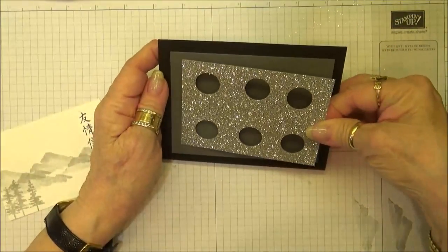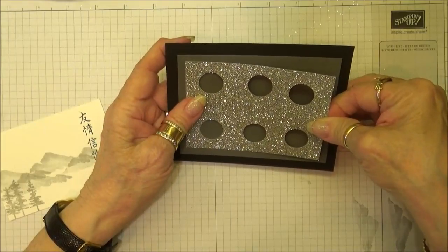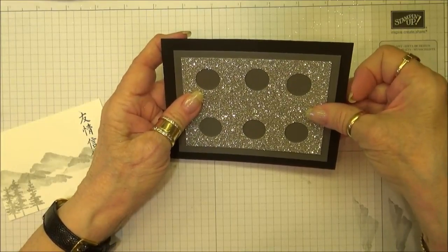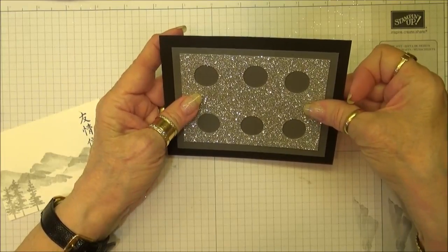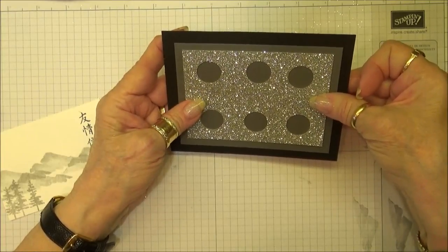We want to make sure this is nicely centered. One of the reasons I'm using the Tombow is because it gives me a little bit of slip time, which means I can move the cardstock around a little bit until it's nicely set.